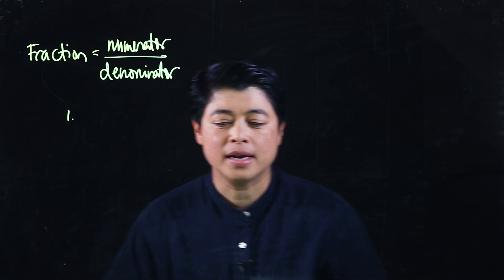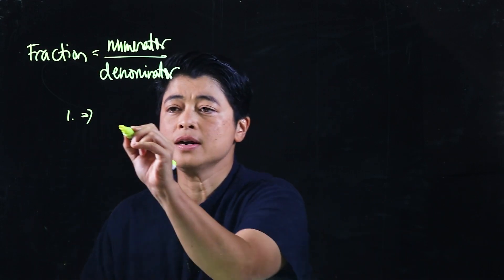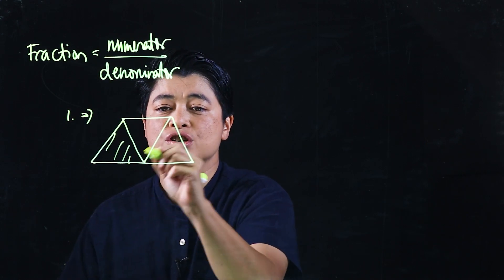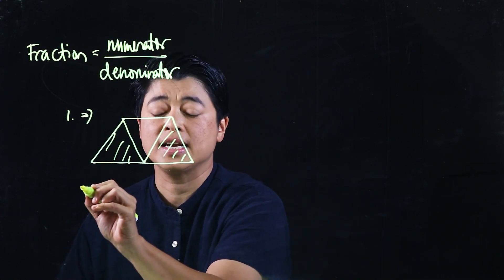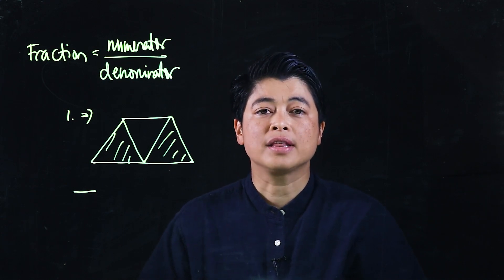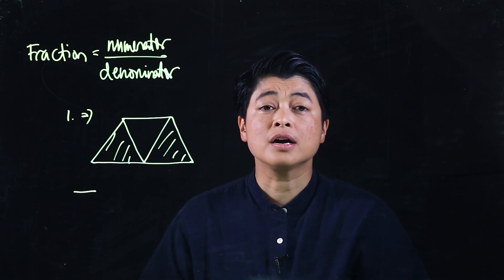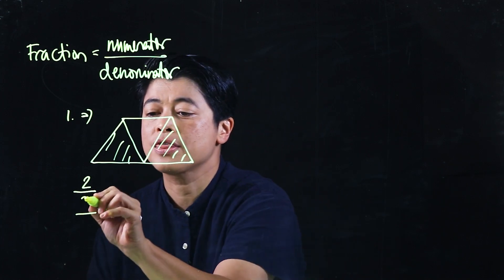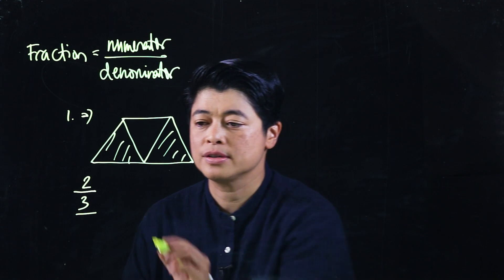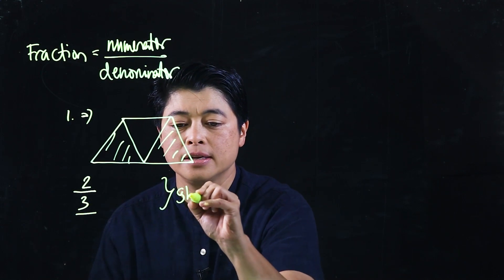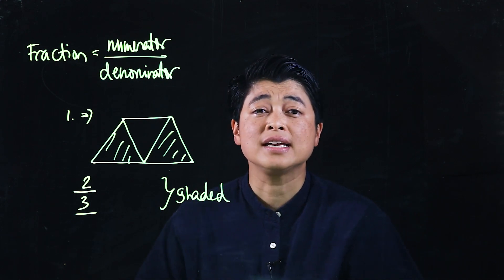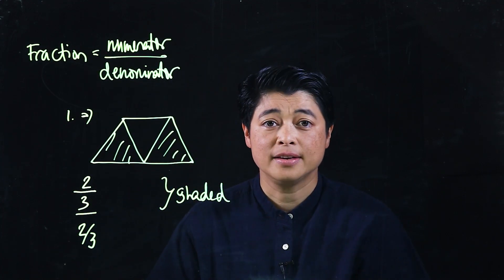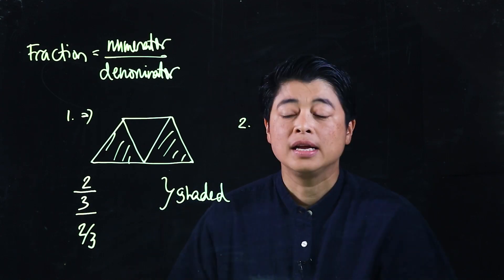The problems we will be doing are from page 79. Problem number one has a picture of three triangles, two of which are shaded. The question says: blank parts out of blank equal parts are shaded. The answer is two out of three equal parts are shaded, so two-thirds of the figure is shaded.